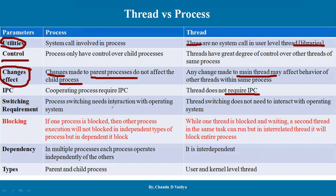Process switching needs interaction with the operating system and takes maximum time. Whereas thread switching does not need to interact with the operating system — there is no interaction with the operating system. Because the thread is created in user space, the operating system has no knowledge of it, and we use libraries here instead.